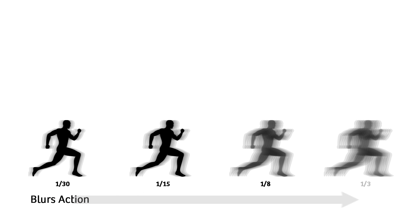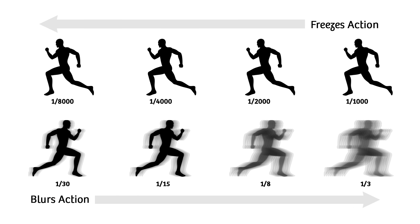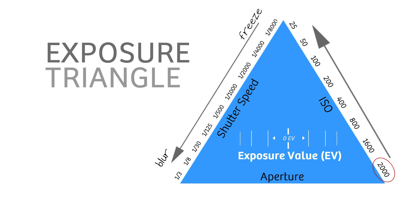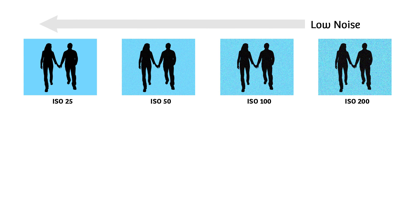Slow shutter speeds blur motion while fast shutter speeds freeze motion. ISO is the sensitivity of the sensor to light, and on the iPhone 6S, the default ISO range is ISO 25 all the way up to ISO 2000. Low ISOs create low noise; high ISOs create high noise.